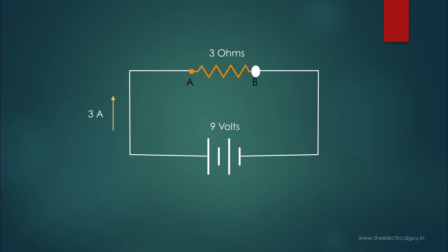After losing most of its energy between point A and point B, the coulomb moves toward the negative terminal of the battery. It is also worth noting that each coulomb will lose some energy to the connecting wires, as they also offer some resistance. When it returns to the negative terminal, it has lost all of its energy that was supplied by the battery. Now the battery will again give 9 joules of energy to each coulomb and the procedure will repeat. This will keep repeating as long as the circuit is complete or the battery has energy. The device that successfully maintains the potential difference is said to develop the electromotive force, or EMF for short.